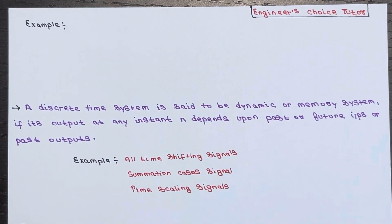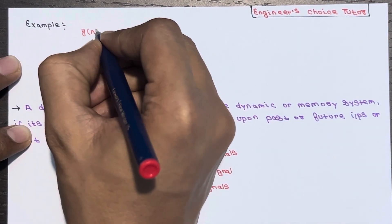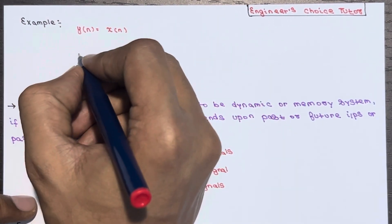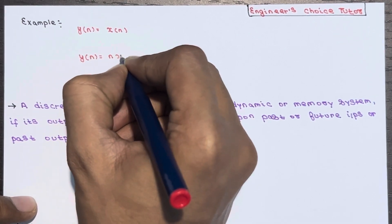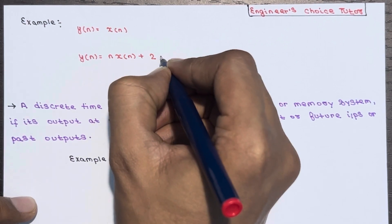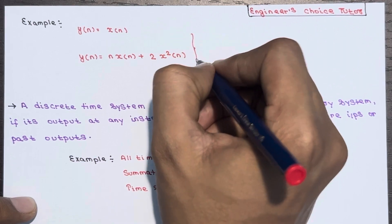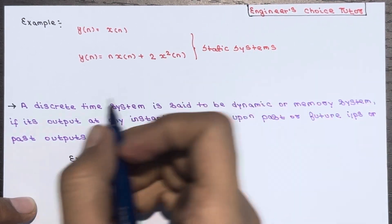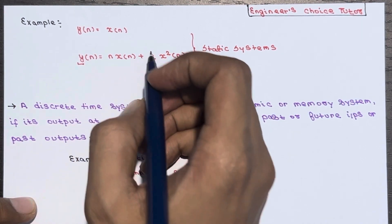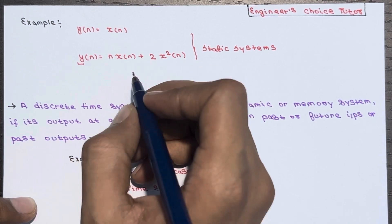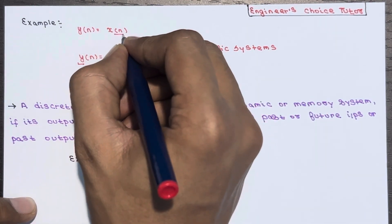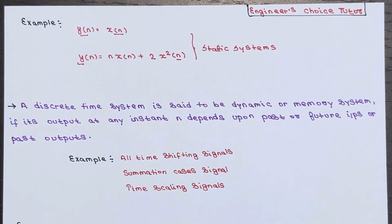Let's see some examples of static systems. Y(n) = X(n) is a static system. Another example: Y(n) = N·X(n) + 2X²(n) is also a static system. These are static because the output at any instant n depends only on the input applied at that same instant n — it depends only on the present value of the input, not on the past or the future.